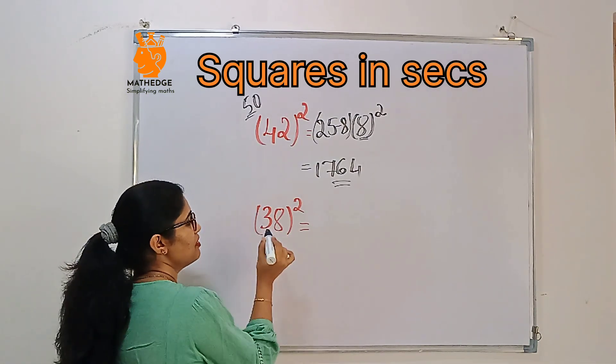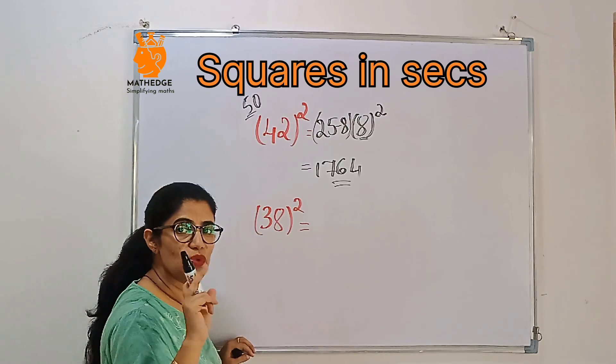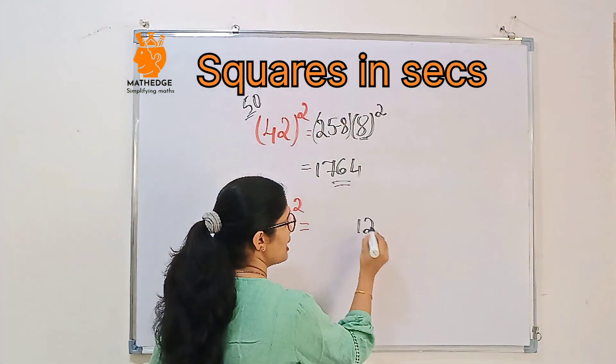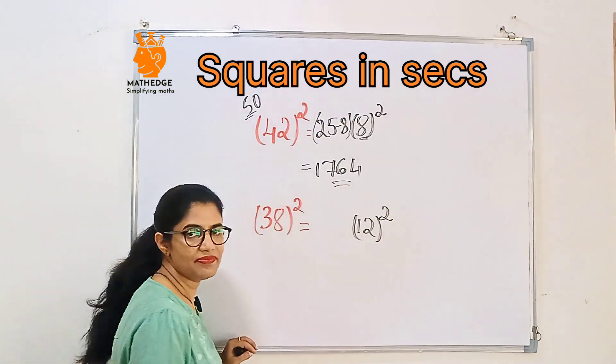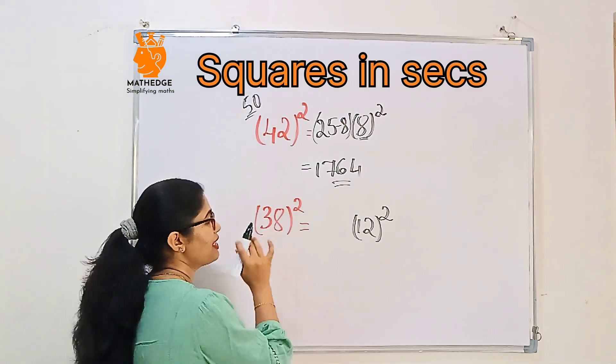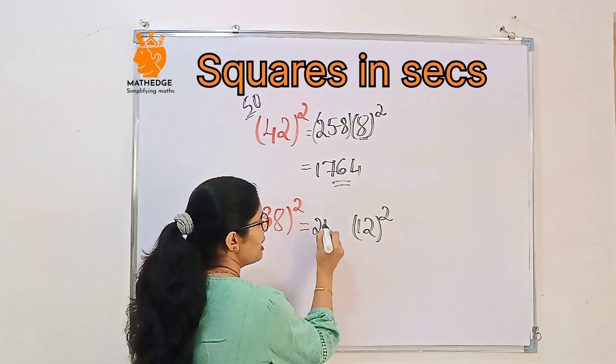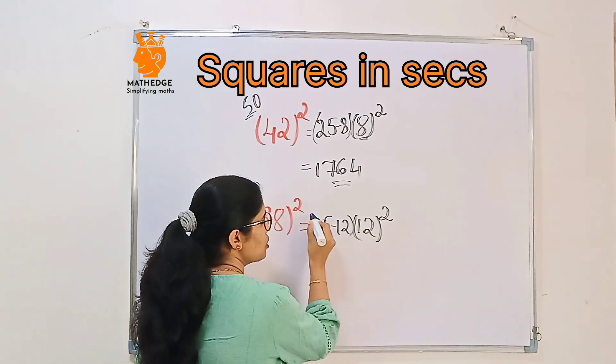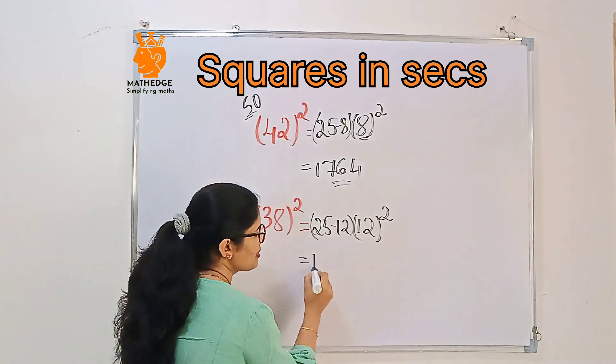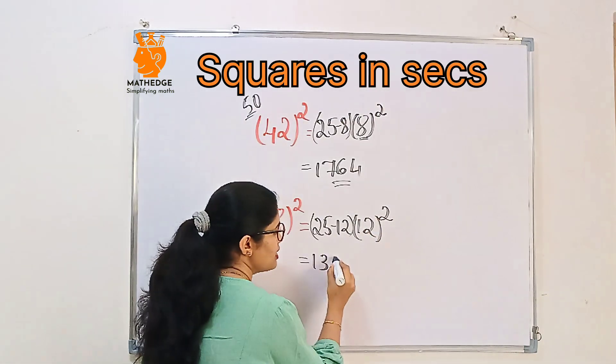So how can we do this? Here also, if you consider base 50, it's 12 less. So write that and square it. Then after that, you should subtract the lesser number from 25. So 25 minus 12 is 13, and 12 squared is 144.